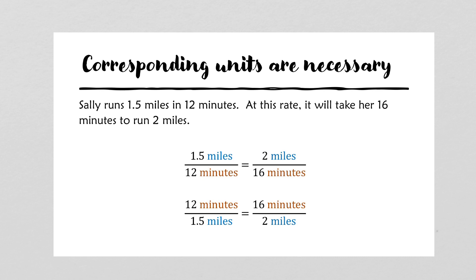Let's look at the following scenario. Sally runs 1.5 miles in 12 minutes. At this rate, it will take her 16 minutes to run 2 miles. Notice below I have two proportions set up. But what I want you to notice even more deeply, or pay attention to particularly, is where the units are located.